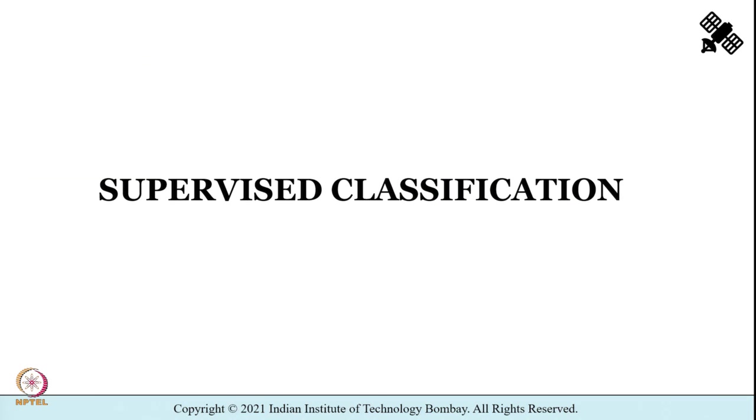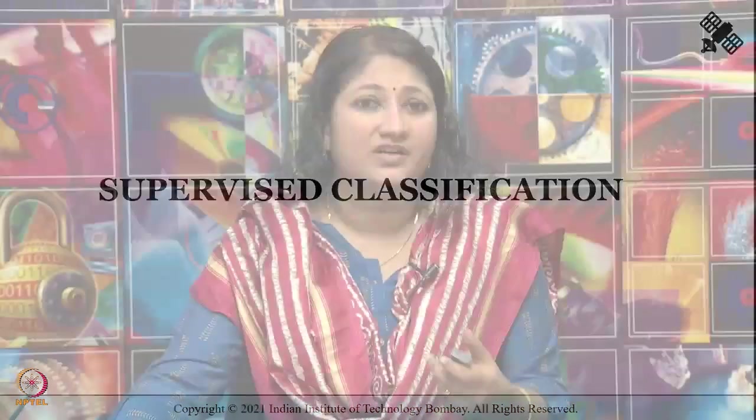Before we begin the exercise, let's briefly review what supervised classification is. In unsupervised classification, you enter the number of classes without a priori information — we do not know beforehand how many land cover types are present. The computer automatically groups pixels with similar characteristics into unique clusters following statistically determined criteria.